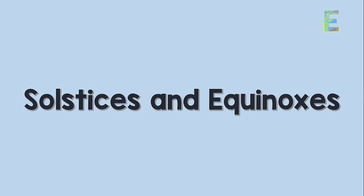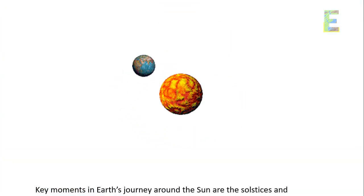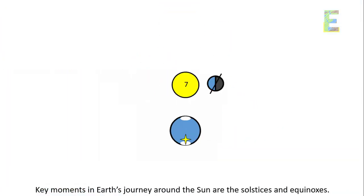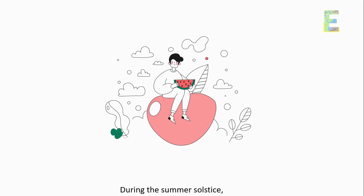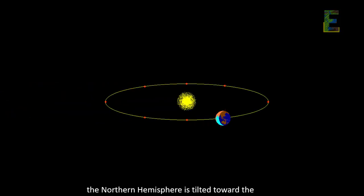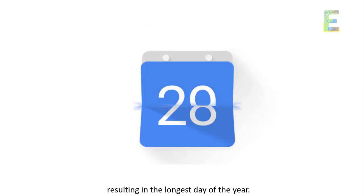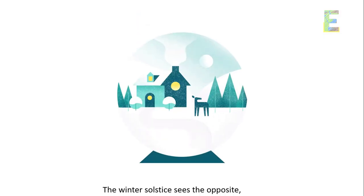Solstices and equinoxes. Key moments in Earth's journey around the Sun are the solstices and equinoxes. During the summer solstice, the northern hemisphere is tilted toward the Sun, resulting in the longest day of the year. The winter solstice sees the opposite.